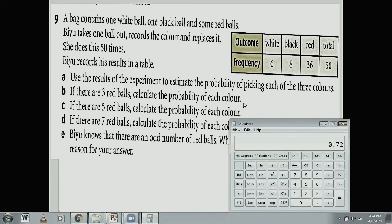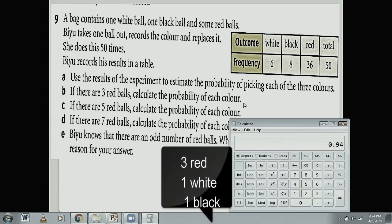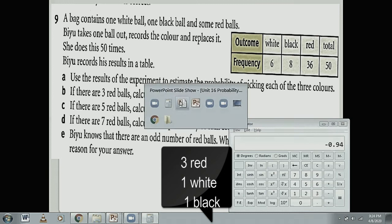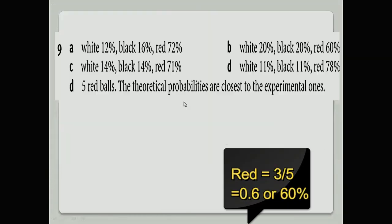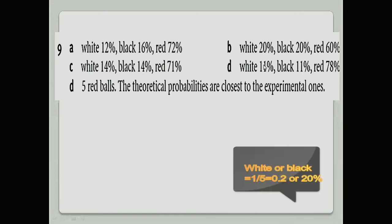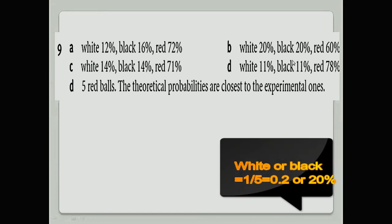Part B: If there are three red balls, calculate the probability of each color. If you have three red balls out of five (because one is white and one is black, so three plus two equals five), three divided by five, you will get your answer, that is 60 percent.